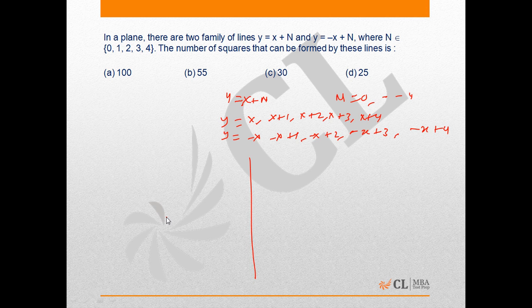Now we need to draw these lines in a coordinate plane. The line y equals x passes through the origin and has its leg in second and fourth quadrant. Similarly, line y equals minus x looks like this, and y equals x plus 1 will be like this.